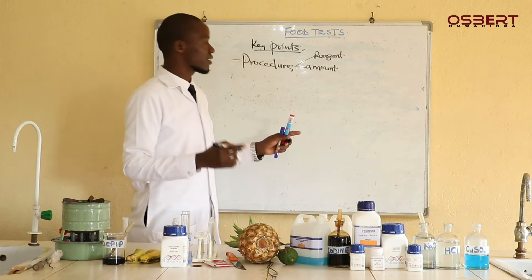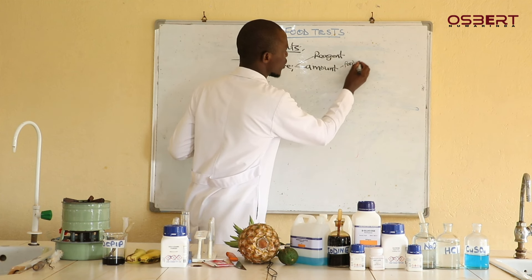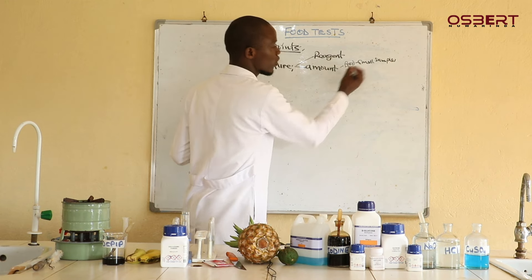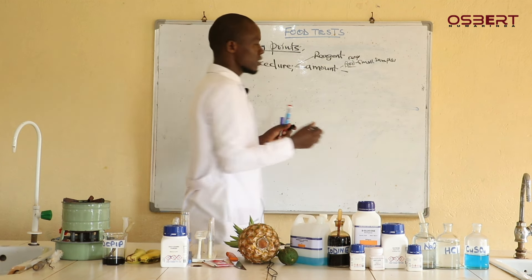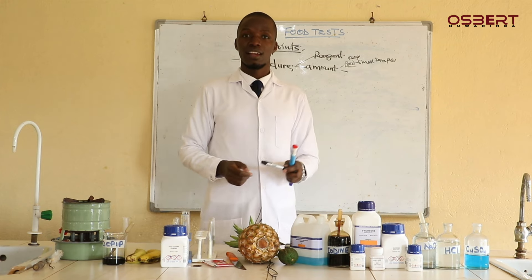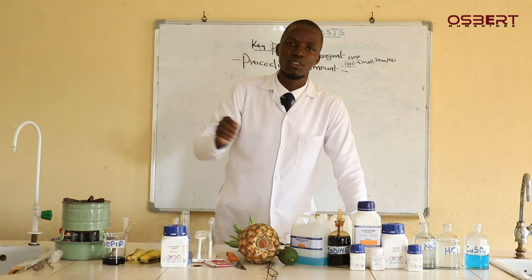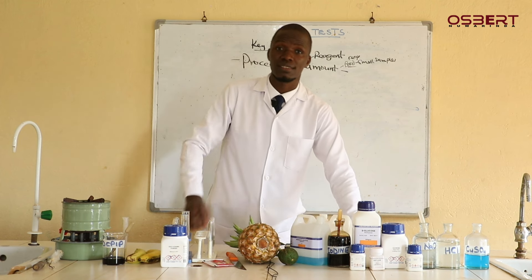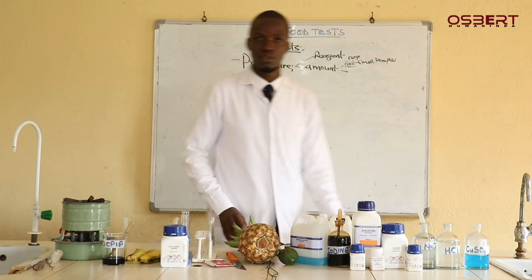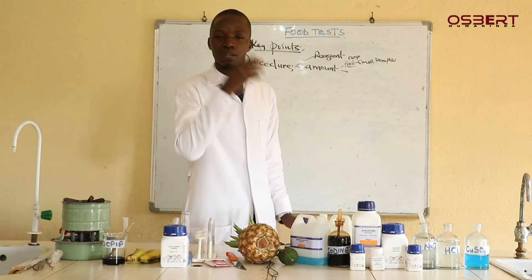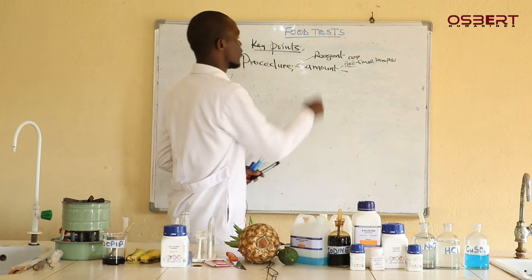In practicals, as far as food is concerned, we shall use small samples — both for the food and for the reagents. You don't need to use a lot just to carry out a test. For example, when they test your blood at the hospital, they don't remove all the blood in your body — they just take a small sample and find out what they are looking for. So we also use small samples.